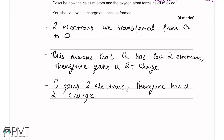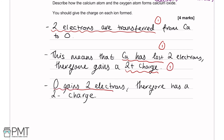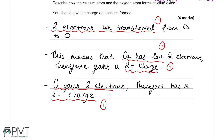That was a four-mark question. The first mark was for saying two electrons are transferred. The second mark was for recognising that calcium loses electrons and oxygen gains electrons. The third mark was for saying calcium gets a 2+ charge. The fourth mark was for recognising that the oxide ion formed has a 2− charge.